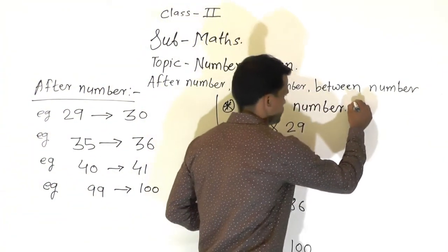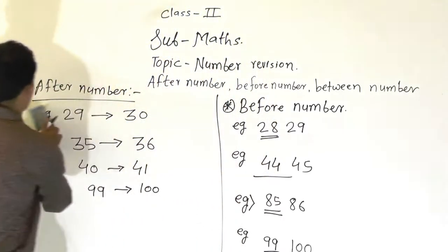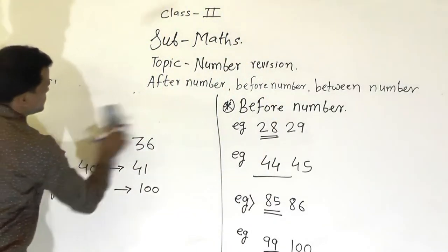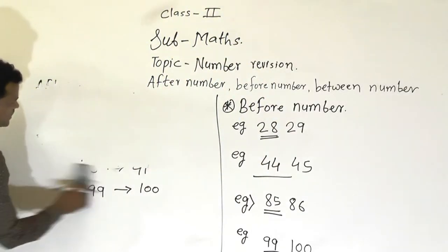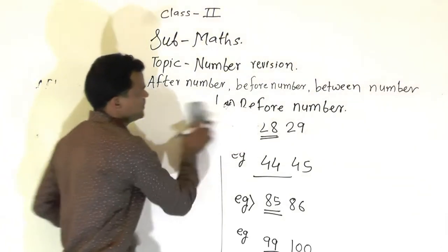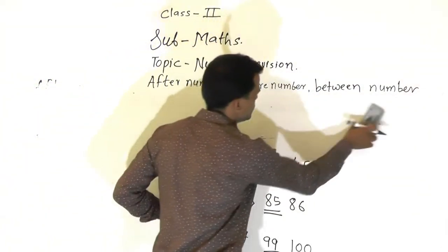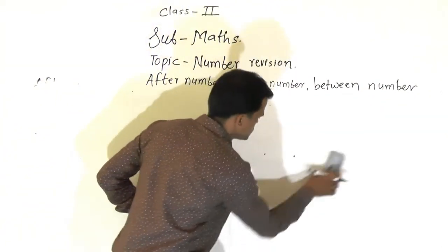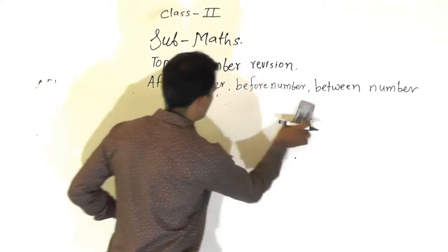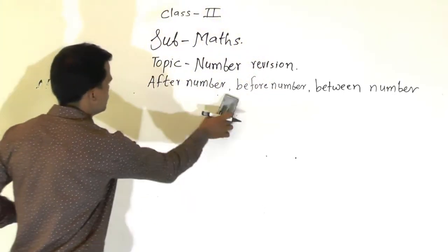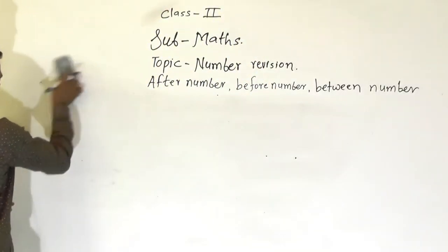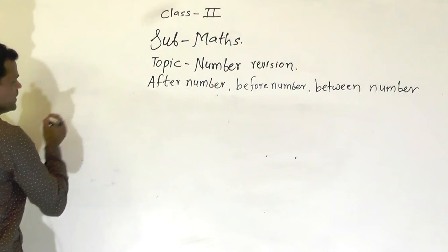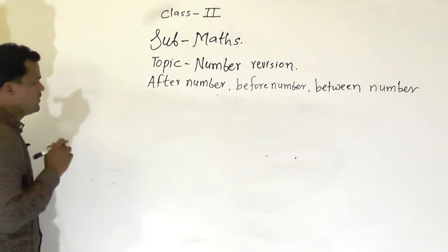Then we will see the next concept, that is between number. Between number means the number that comes in between two given numbers. So two numbers are given and we have to find the between number.